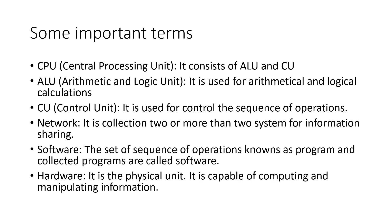Important terms — CPU is a collection or group of ALU and CU. ALU stands for Arithmetic and Logical Unit, and CU is called a Control Unit. Network is a collection of two or more systems for the purpose of information sharing. Software is a set or sequence of operations known as a program, and collected programs are called software. Hardware is a physical unit capable of communicating and manipulating information; it is in tangible form, meaning it is touchable.